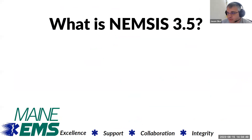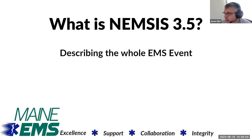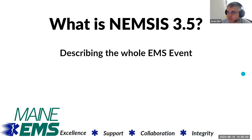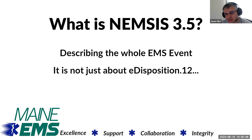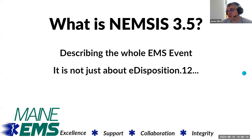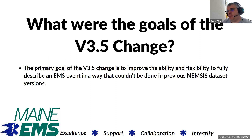So continuing on — what is NEMSIS 3.5? NEMSIS is a new data set. We're on version 3.4 right now of the NEMSIS data set, and 3.5 is a new way of describing the whole EMS event. It's not just about the dispositions. One of the major changes to the data set is the dispositions, but that's not the only thing changing. The goal of this is to improve the ability and flexibility to fully describe the EMS event in a way that couldn't be done before.